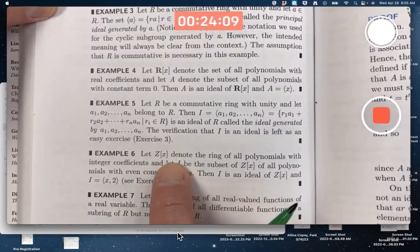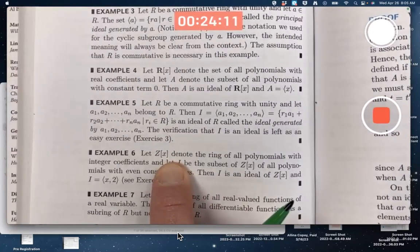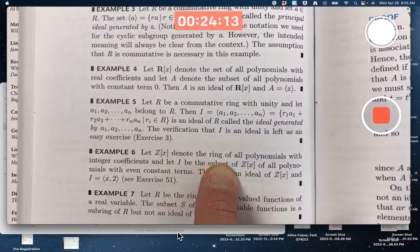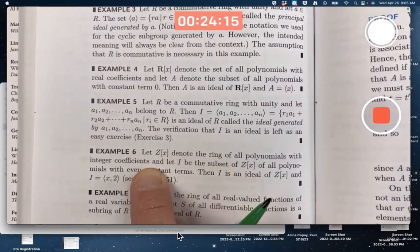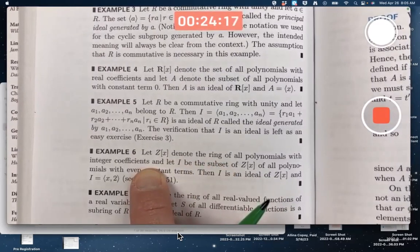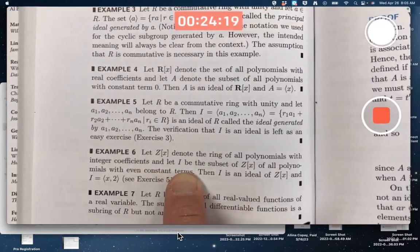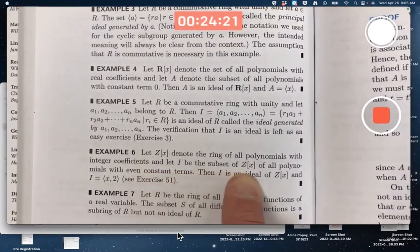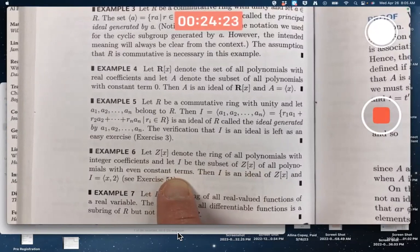Consider example six: Z[x], the ring of all polynomials with integer coefficients from Z. I is initially defined to be the subset of Z[x] of all polynomials with even constant terms.